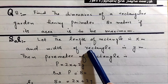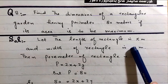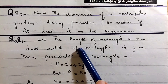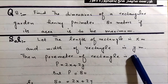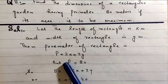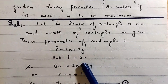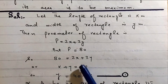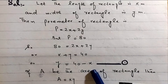Let the length of the rectangular garden be x meters, and the width be y meters. Then the perimeter P equals 2x plus 2y. But P is 80 meters, so we have 2x plus 2y equals 80, which gives x plus y equals 40, therefore y equals 40 minus x.